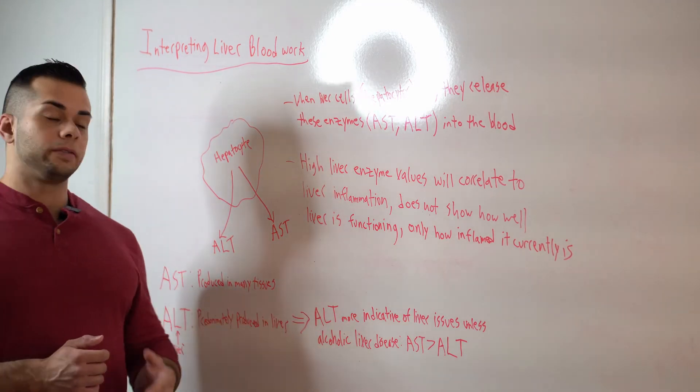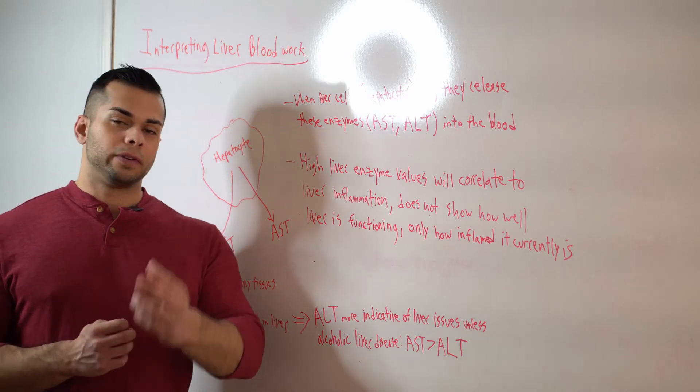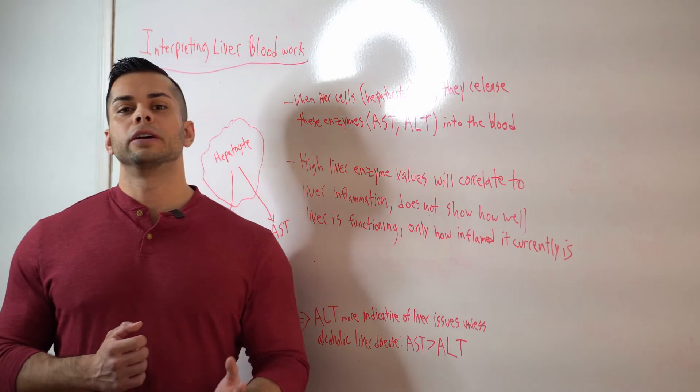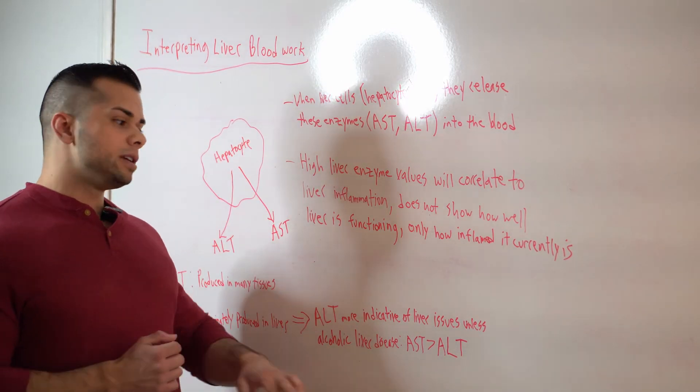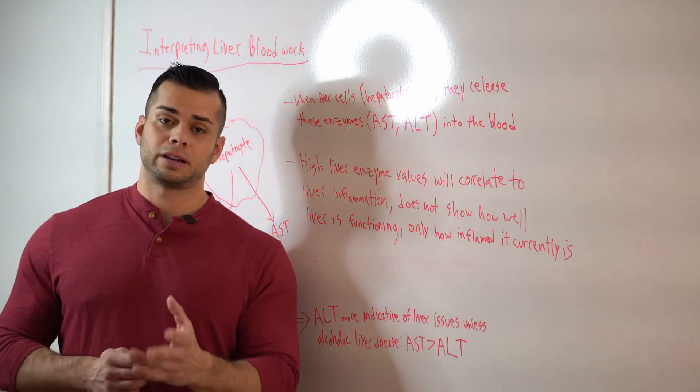So to summarize, ALT is more indicative of liver issues unless we're talking something that's very specific, which is known as alcoholic liver disease. In alcoholic liver disease, it's actually very common to see AST values be twice as much as ALT liver enzyme values.